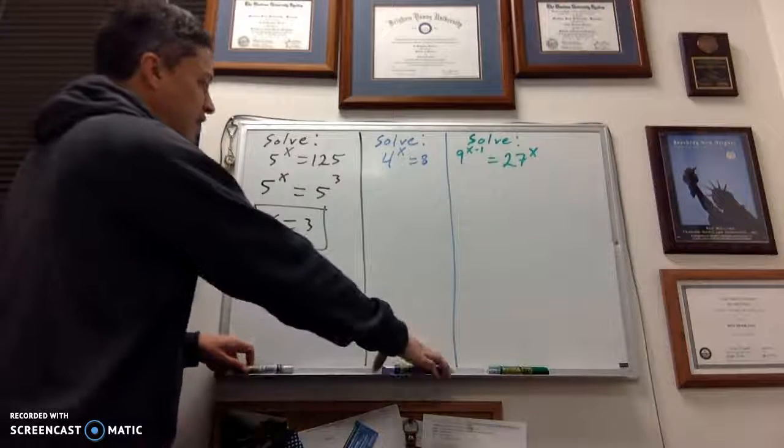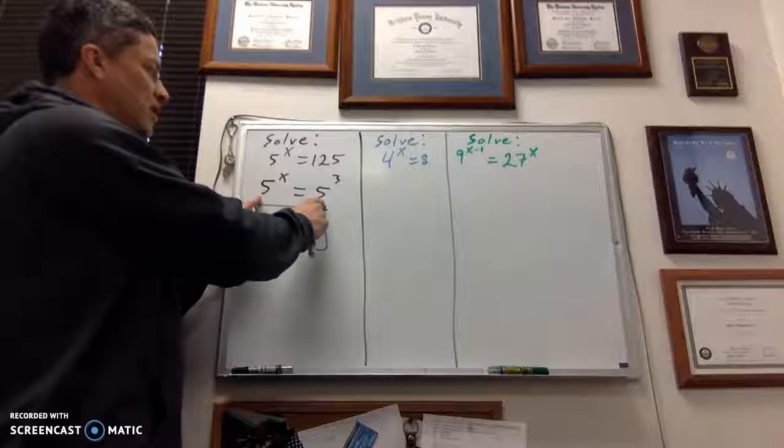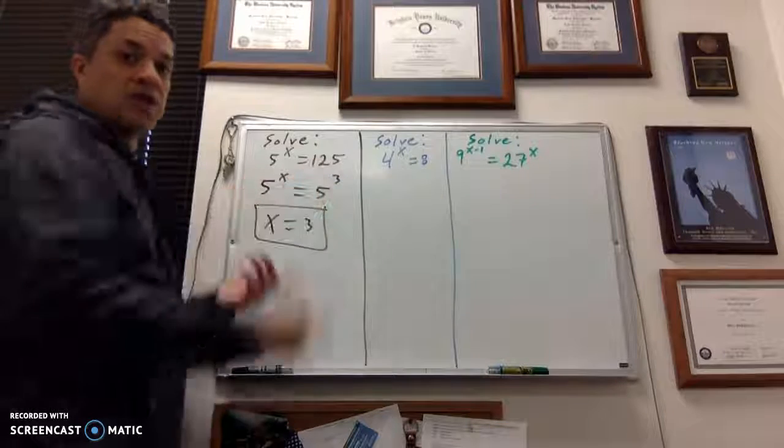So that's the key. If you can get these things down so that you have the same bases, then you can just work with the exponents and ignore the bases.